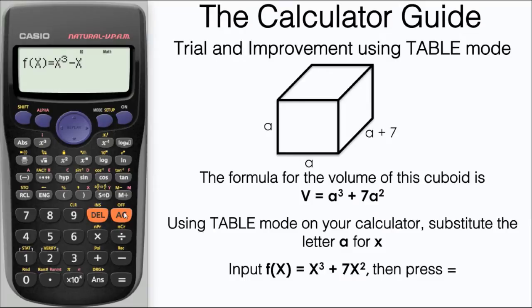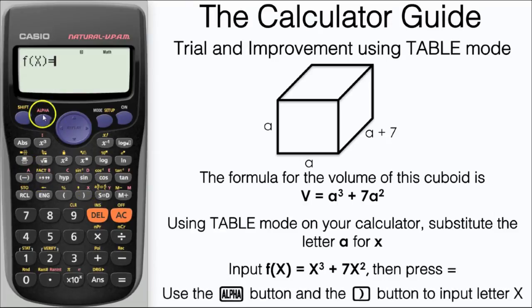We're going to input the formula for the volume into the table mode on the calculator. The first thing I need to do is clear out my old f of X which is from trial and improvement video 1. Press AC to clear. Now we need to substitute any of the A's for X's when we're inputting this into the calculator. This is because the calculator operates a function of X rather than A.